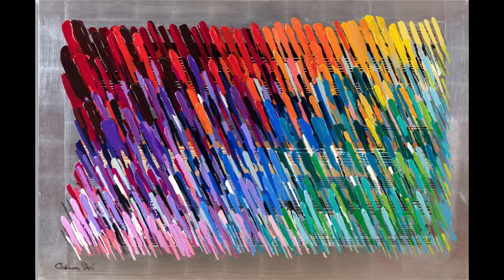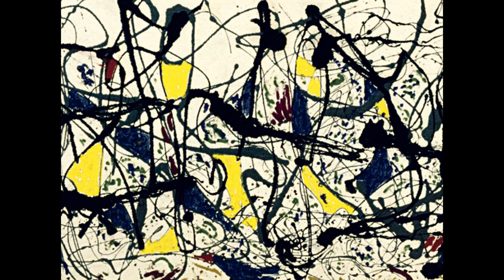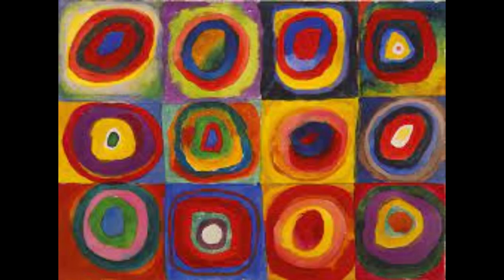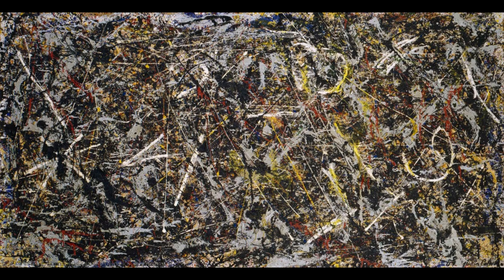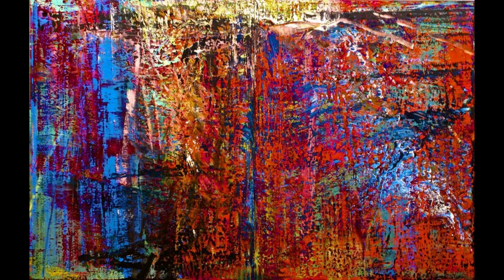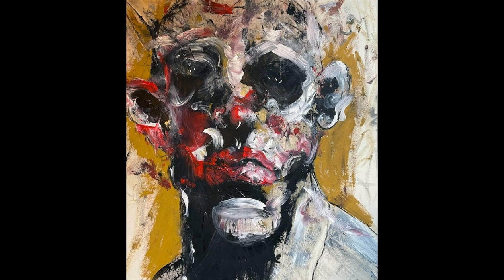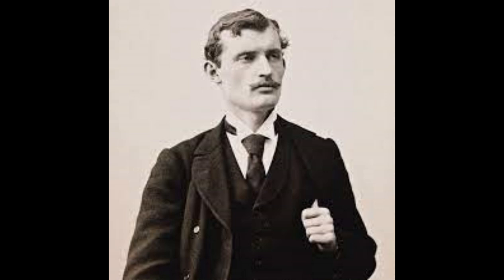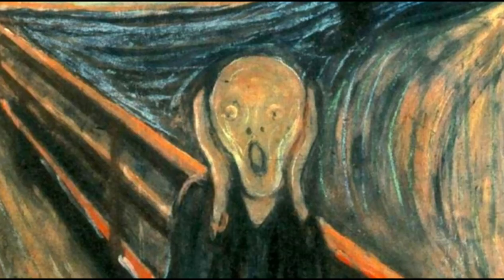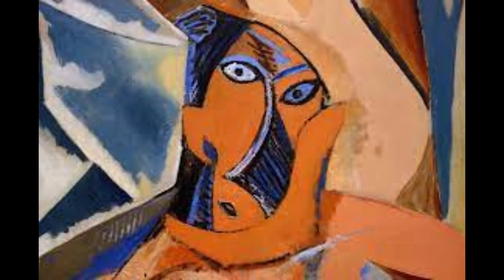Modern art is a broad term that covers various movements and styles that emerged in Europe and America in the late 19th century and lasted until the mid 20th century. Modern art was influenced by the industrial revolution, the world wars, social movements and scientific discoveries. It challenged traditional norms and conventions of art making, exploring new ways of expression, representation and experimentation. Modern art is characterised by its diversity, innovation and originality. Some of the most important modern art movements include Expressionism, Cubism, Surrealism, Abstract Expressionism, Pop Art and Minimalism. Prominent modern artists include Edvard Munch, Pablo Picasso and Salvador Dalí, with works such as The Scream, Les Demoiselles d'Avignon and The Persistence of Memory.